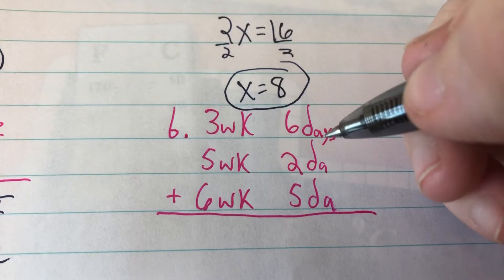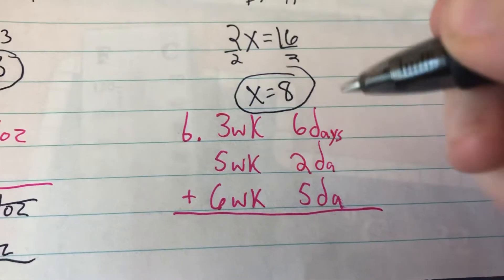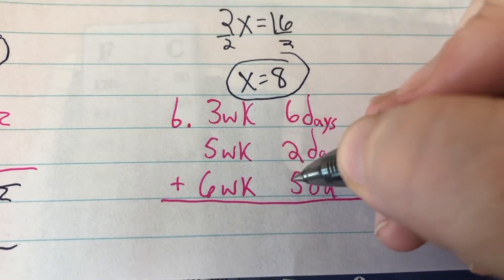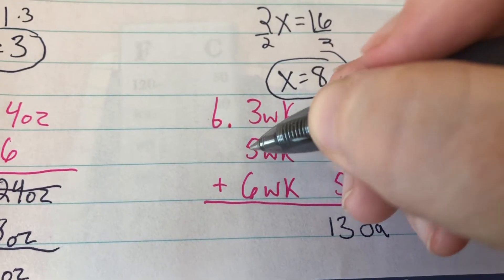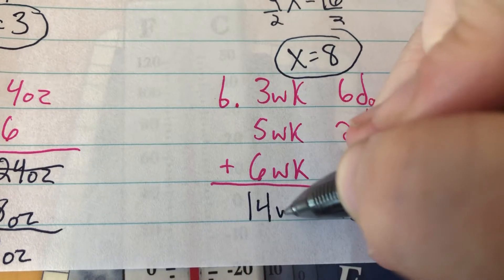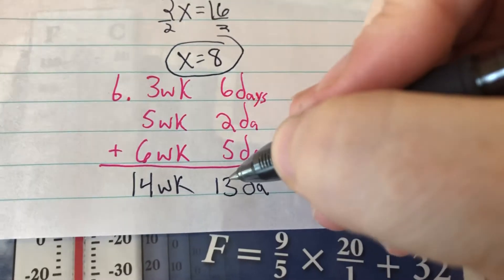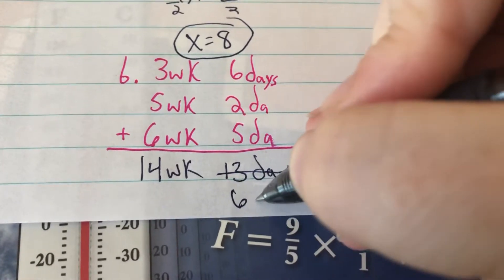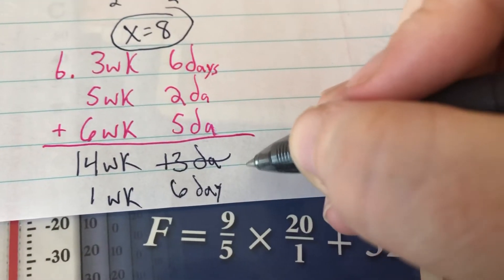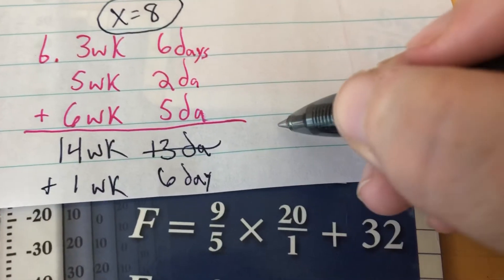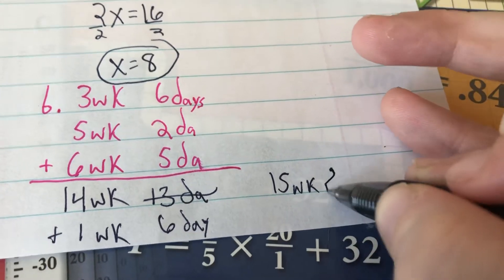On B, we are adding up weeks and days: 3 weeks 6 days, 5 weeks 2 days, 6 weeks 5 days. That totals 14 weeks and 13 days. We know there are 7 days in 1 week, so we have 6 days left over and 1 more week. Adding those up, that's going to be 15 weeks and 6 days.